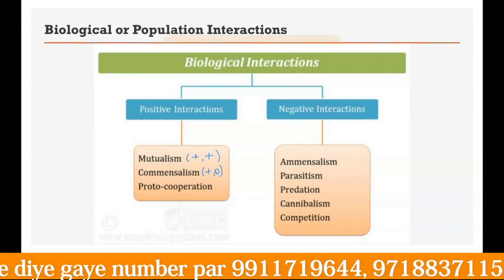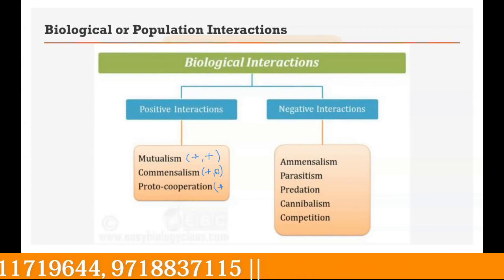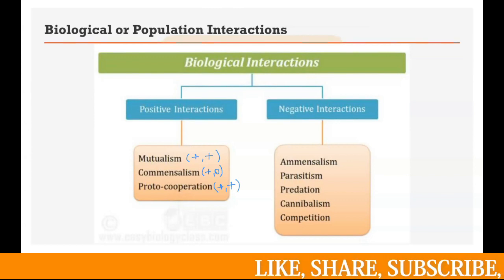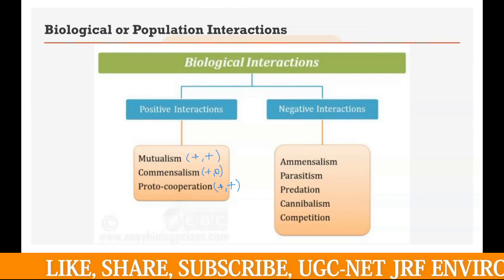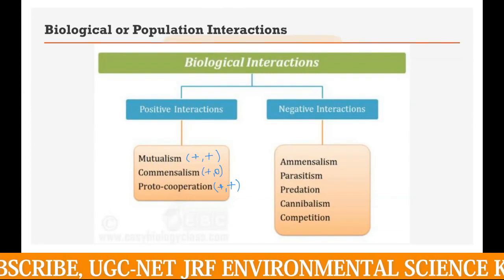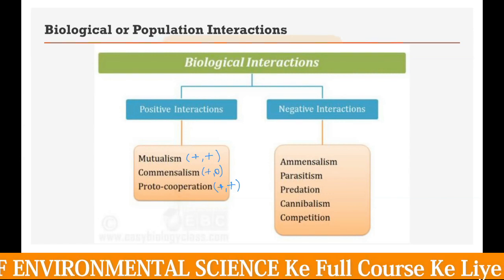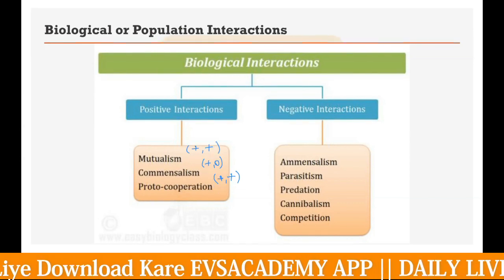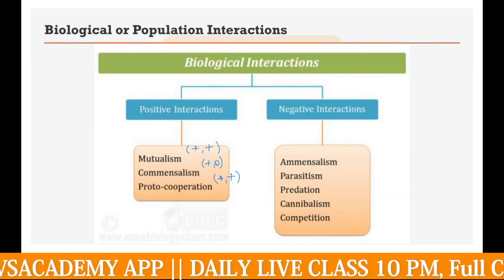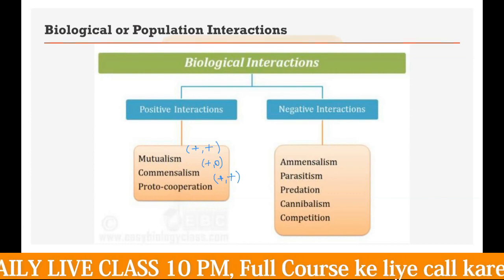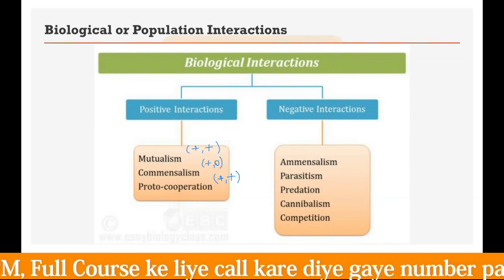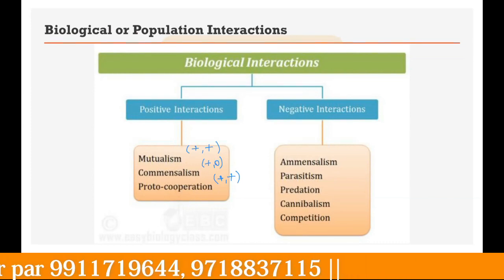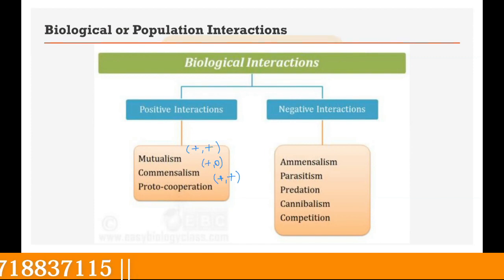In proto-cooperation, both organisms are benefited, but the relationship is not obligatory — both species can survive alone. The example is the hermit crab and sea anemone: the hermit crab gets protection from the sea anemone, and the sea anemone, which cannot move on its own, benefits from being transported to new locations for nutrients by the hermit crab.